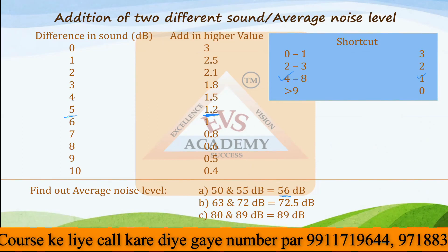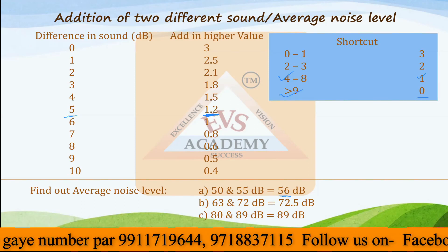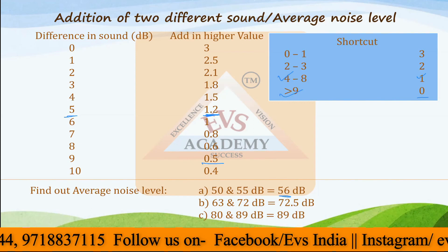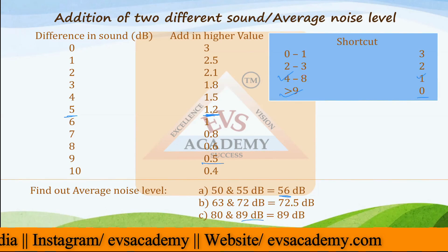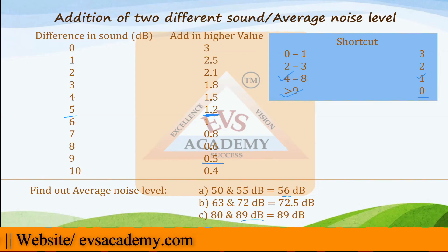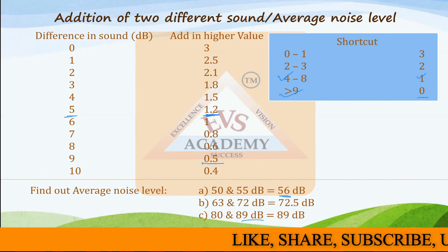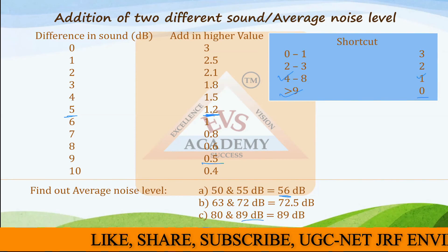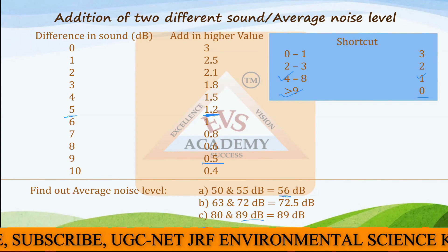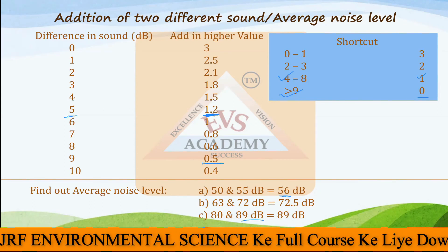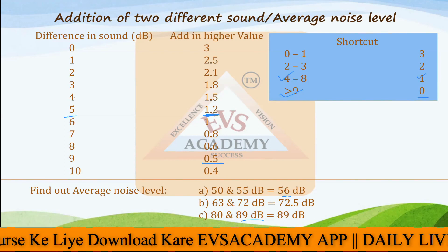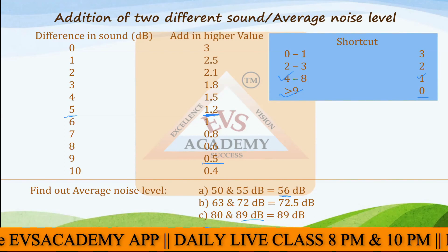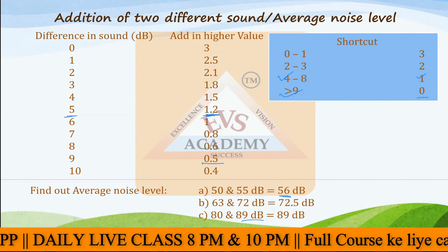For 63 and 72 decibels, the difference is 9, so the addition is almost negligible — approximately 0 using the shortcut, or 0.5 from the accurate table, giving 72.5 decibels. For 80 and 89 decibels, the answer is 89.5 or 89 decibels. If your options are very close together, use the exact table. In the UGC NET examination of environmental science, the options are typically well apart — such as 80, 90, 100, 110 decibels — so 90 decibels would be the answer, and the shortcut table is sufficient.